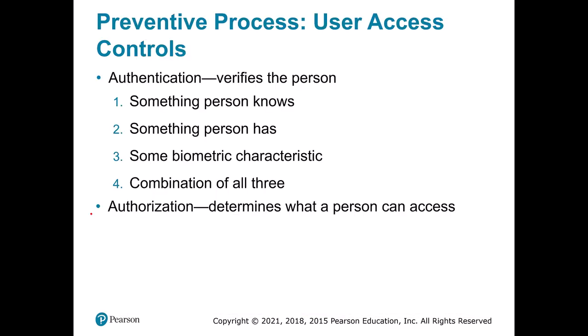Thinking about preventative processes, a key thing is user access controls. Authentication is verifying that someone is who they say they are, and we can use a combination of methods. Think about your iPhone: something the person knows (like your passcode), something you have (like a physical key — imagine your car key), or something biometric like face scanning or a thumbprint, or some combination of all of those things. This is essentially what Duo does.